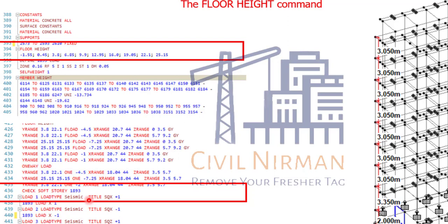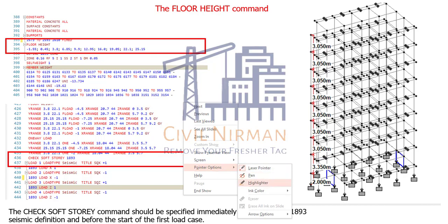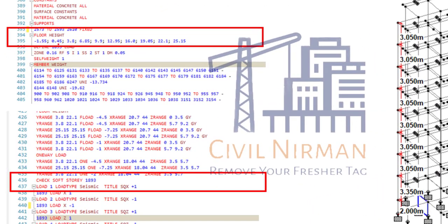You have to add the 'check soft story' command before the seismic load case. The first of the floor heights should be the fixity level — the level where the supports are. As I have specified, the floor heights start at minus 1.55 and then continue with 3.350, 3.050, and you will get all the Y coordinates. My ground floor level starts with a coordinate of 0.45 and supports are below that in the negative Y direction at minus 1.55.